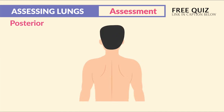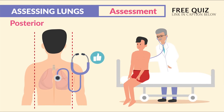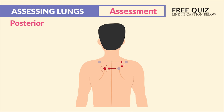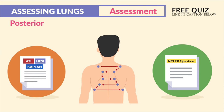For the posterior assessment, have the client lean forward with their hands in their lap to separate the shoulder blades, giving a clean listen without muffling. Start at the top, then the opposite side to compare, then work your way down, listening and comparing on each side as you go.